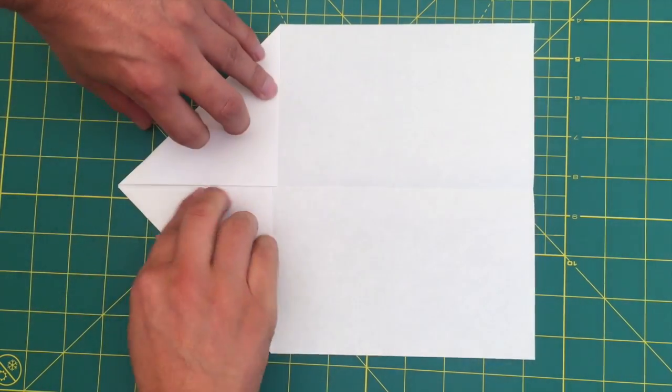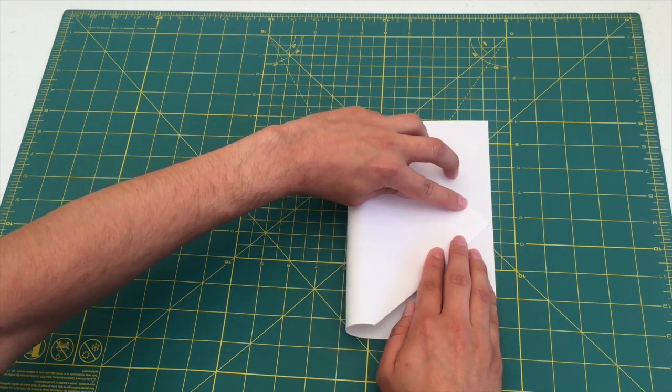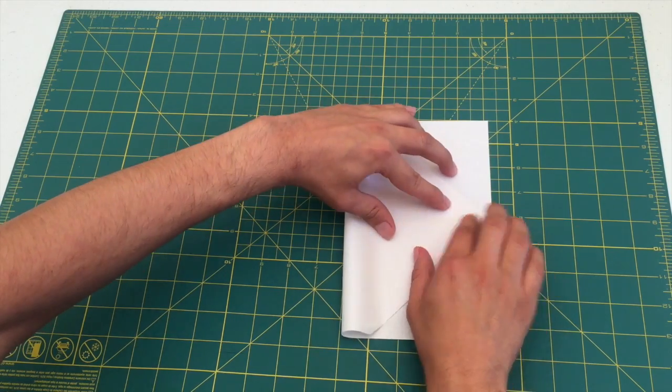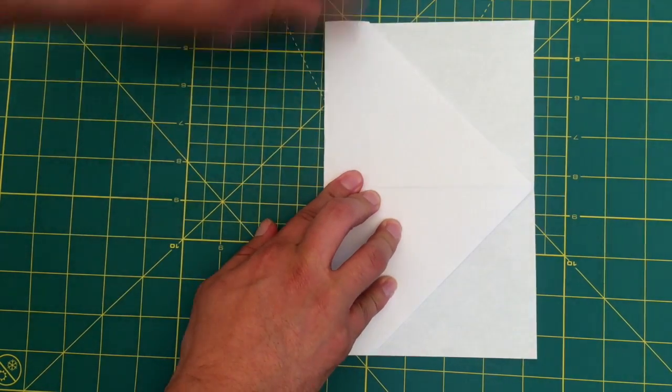Time for our first big fold. We're going to take the tip of the triangle and fold it to the center of the crease on the back of the airplane. I've marked it with the arrow. It's always important to crease your folds thoroughly. That way the plane will fly better.